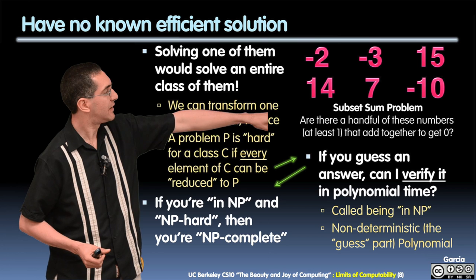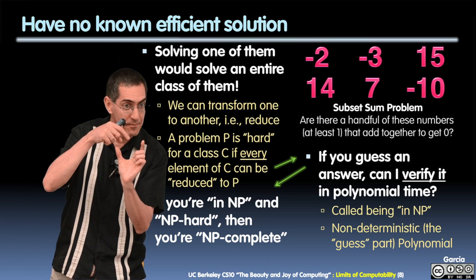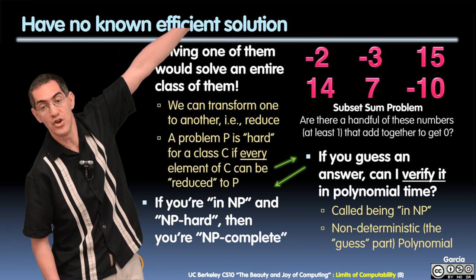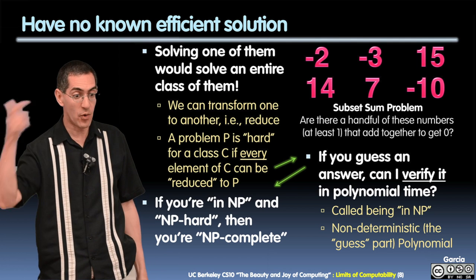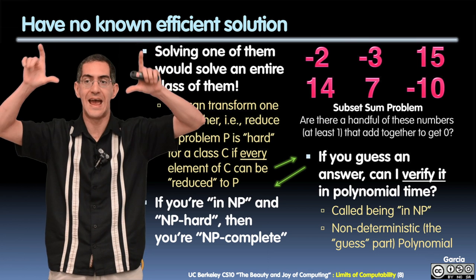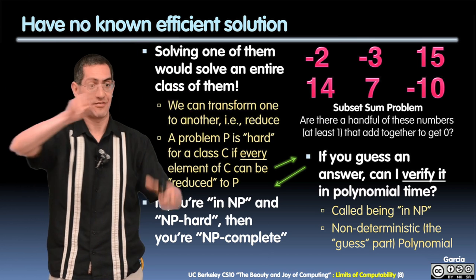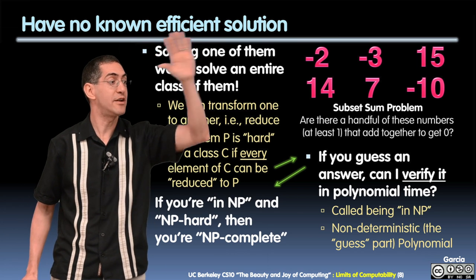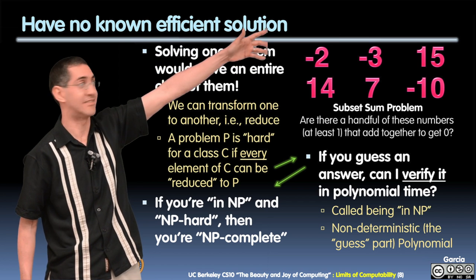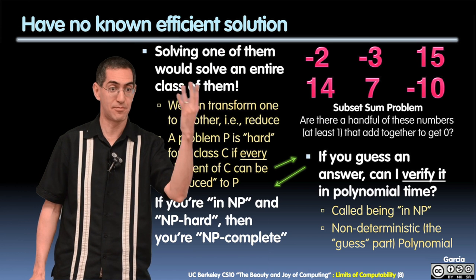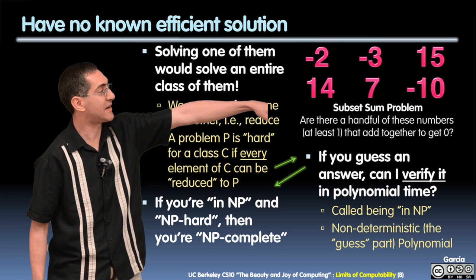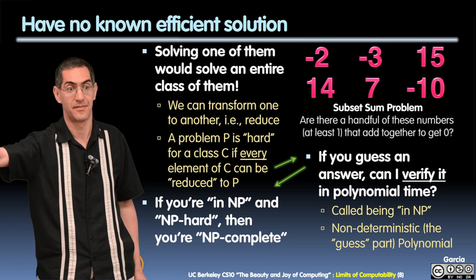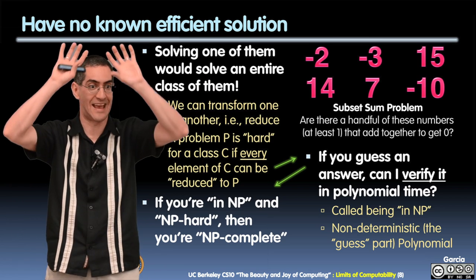Hard idea three on this slide: if you are in NP — verifiable in polynomial time — and you are NP-hard, meaning you're in the hardest class of the no-known-efficient-solution group, then you're in the exalted membership of a group called NP-complete. You have to have both: be in NP (verifiable in polynomial time) and be NP-hard (the hardest kind to solve). Subset sum is both — it's in NP and it's NP-hard — so subset sum is NP-complete.